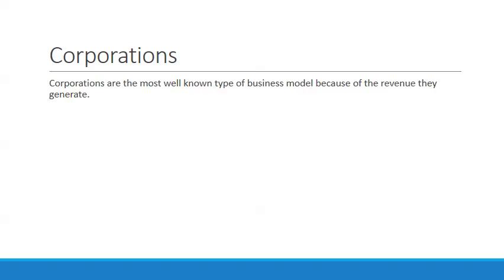Now, corporations. While corporations may not be the largest percentage of the business market, they are obviously the most well-known and the business type that garners the most profit. They're primarily known because of the revenue they generate. The reason you know names like Coke, Microsoft, and Apple is because of the marketing and revenues they generate.